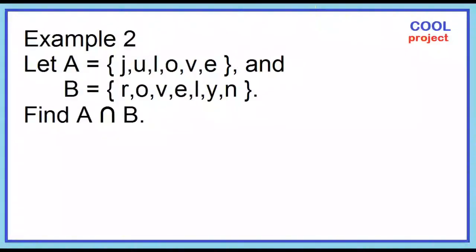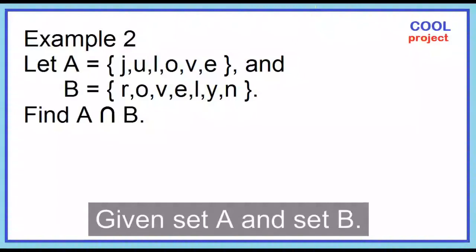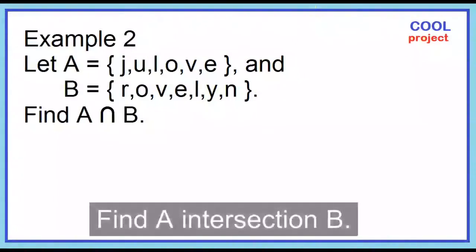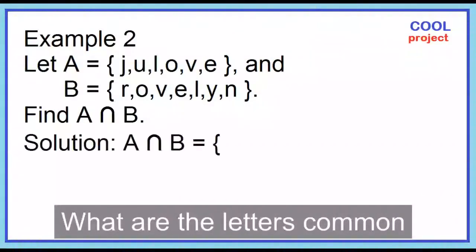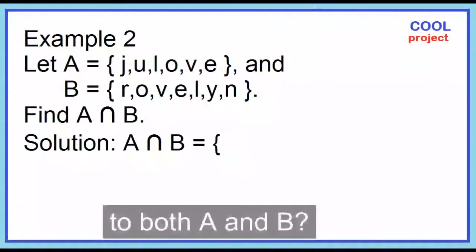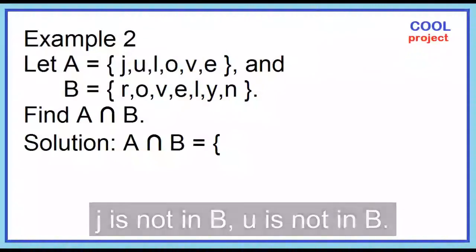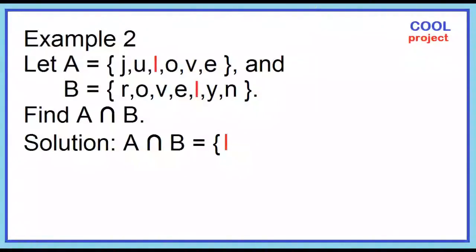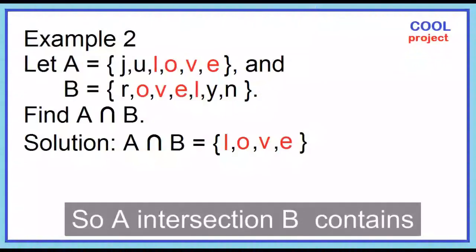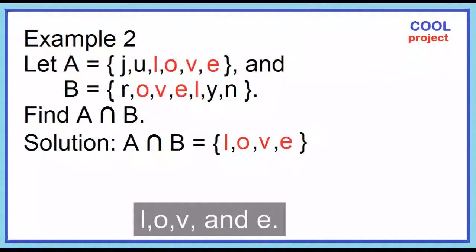Example number 2: Given set A and set B, find A intersection B. What are the letters common to both A and B? J is not in B, U is not in B, L is common, O is common, V is common, and E is common. A intersection B contains L, O, V, E.